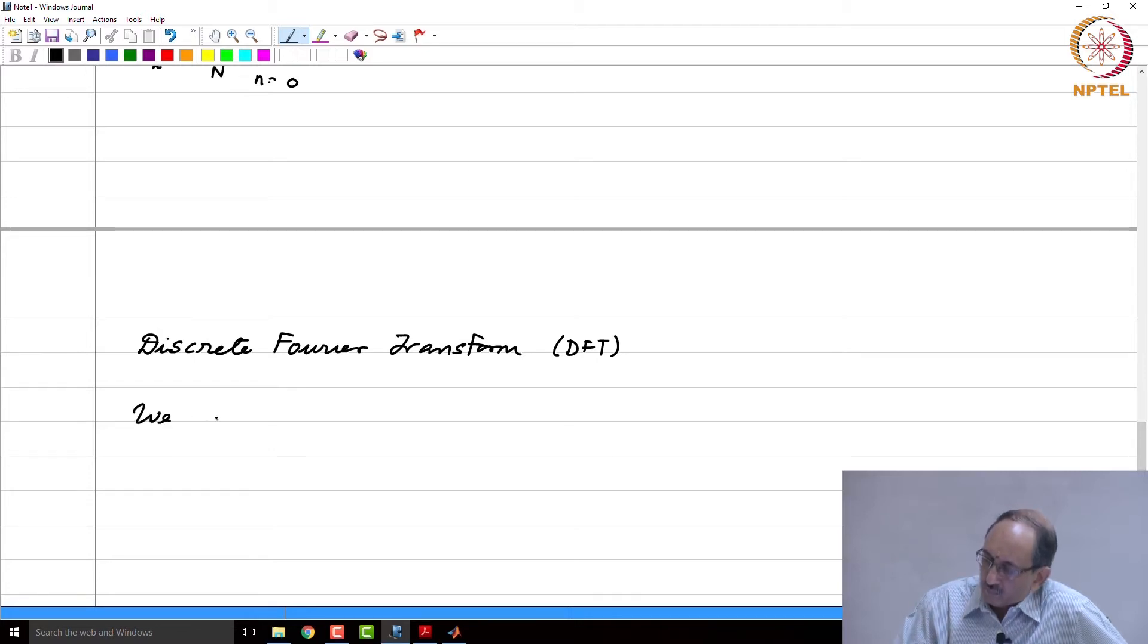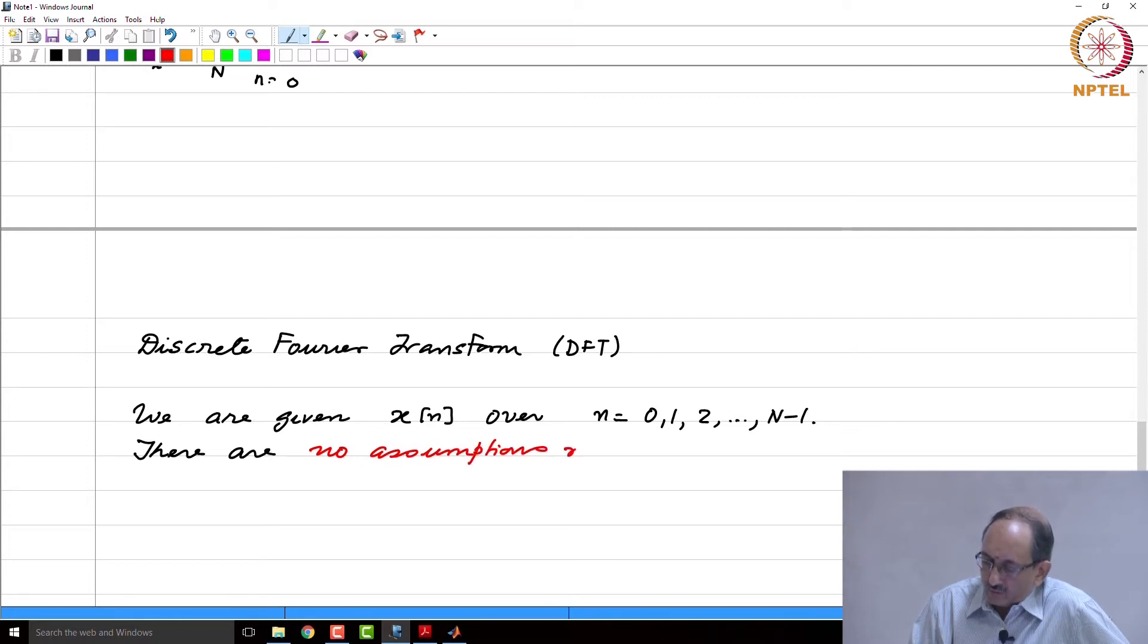We are given x(n) over n equal to 0, 1, 2 up to cap N minus 1. So N data points are given to you. We are further told there are no assumptions made about x(n) outside 0 to N minus 1. Now, what do we mean by this?